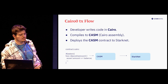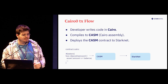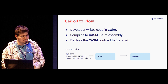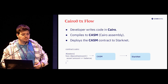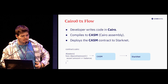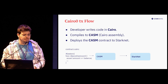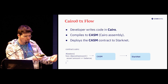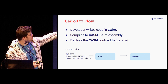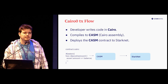This is an example of a contract that could be written with a function called deposit. It gets an amount to deposit and verifies that you have enough balance to deposit. This code gets compiled to Casm and then deployed to StarkNet.